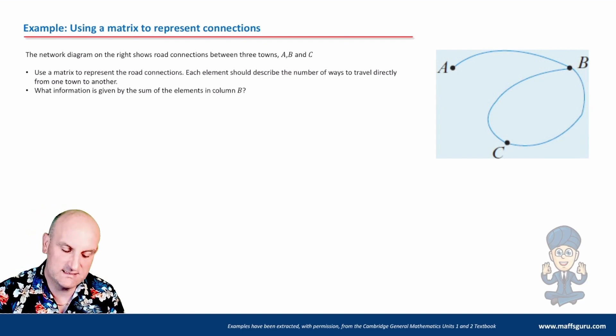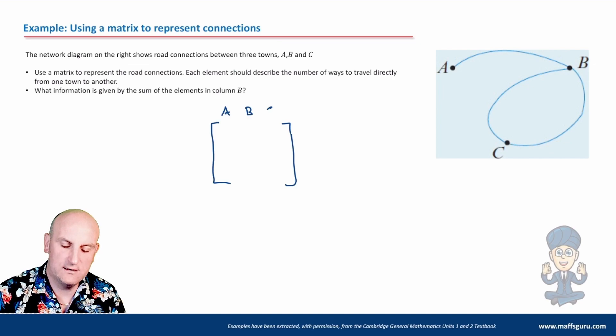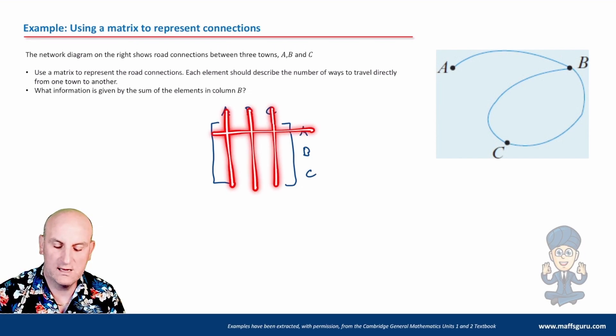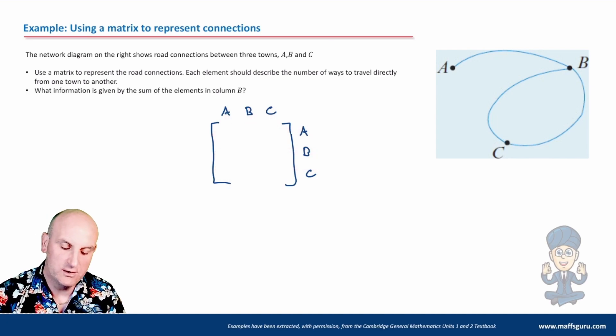And again, this is a bit of an easy one. So the first thing I do is I'm going to write A, B, C along the top, and A, B, C down the side. Now the reason I'm doing that is because we're trying to work out which towns are connected to which other towns. So where they cross is very important.